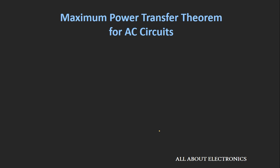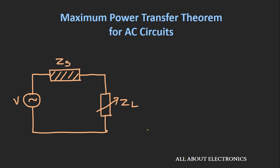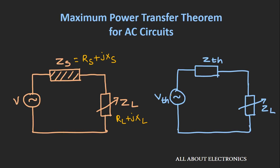Now let's see the maximum power transfer theorem for AC circuits. For the AC circuit, the DC voltage source is replaced by an AC source, and the series internal resistance is replaced by a series impedance — so apart from the resistive part, we now also have a reactive part. Similarly, the load resistance is replaced by a load impedance with both resistive and reactive parts. If this load impedance is connected to some AC circuit, the equivalent circuit will have a Thevenin's equivalent voltage source Vth in series with Thevenin's equivalent impedance Zth, given as Rth + j·Xth.